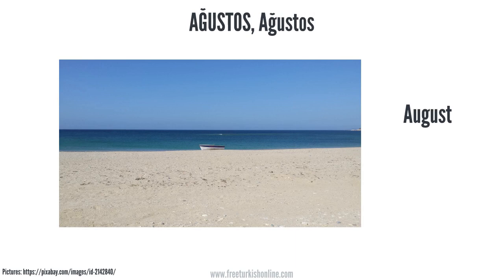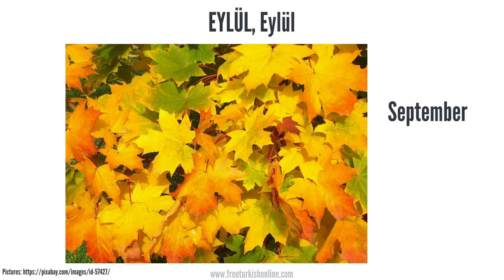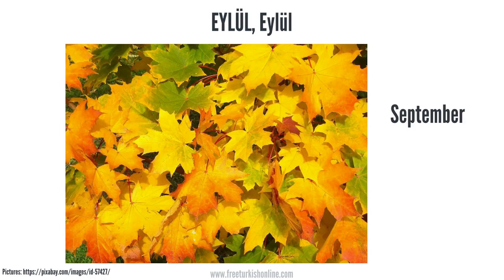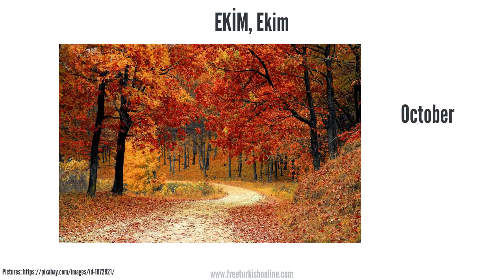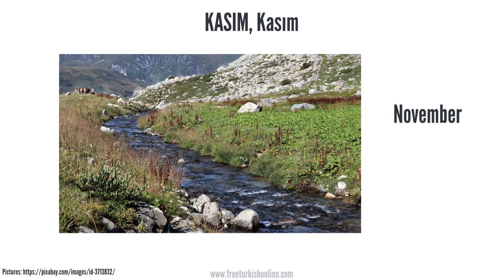August means Ağustos in Turkish. Ağustos. Please repeat after me: Ağustos. September means Eylül in Turkish. Eylül. Please repeat after me: Eylül. October means Ekim in Turkish. Ekim. Please repeat after me: Ekim. November means Kasım in Turkish. Kasım. Please repeat after me: Kasım.